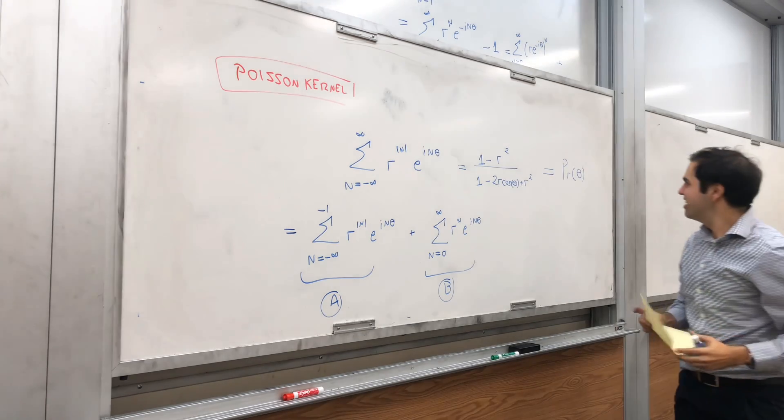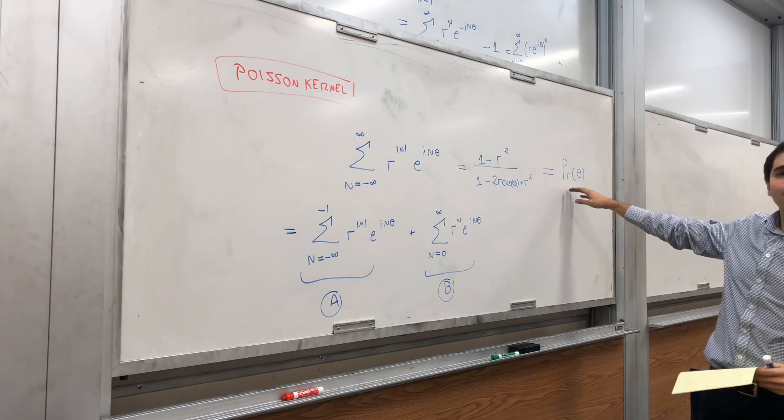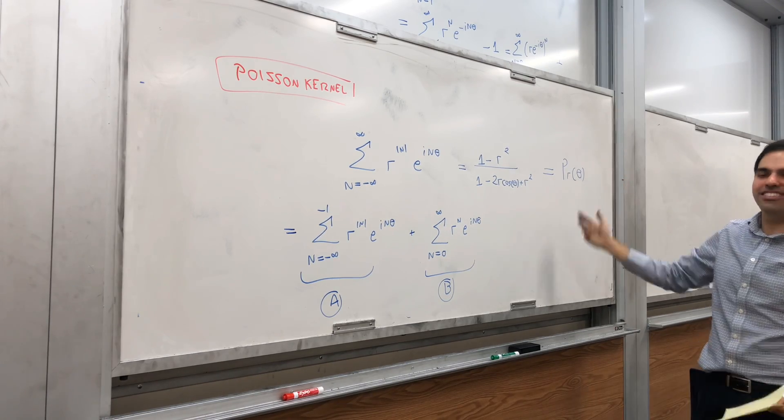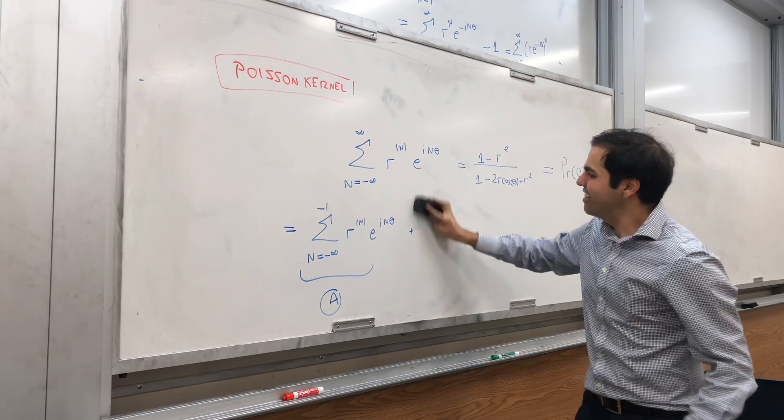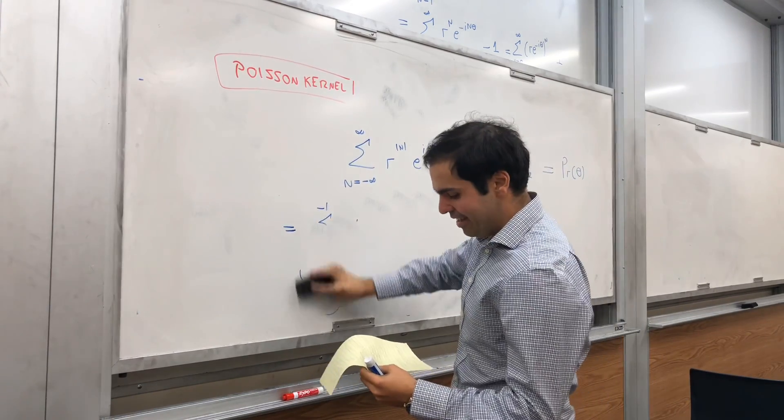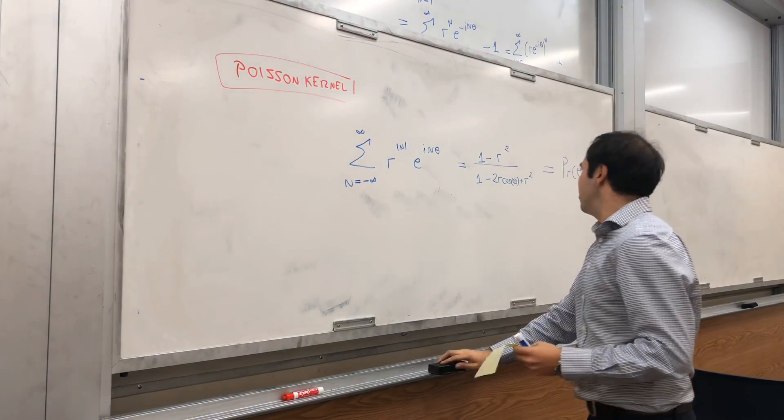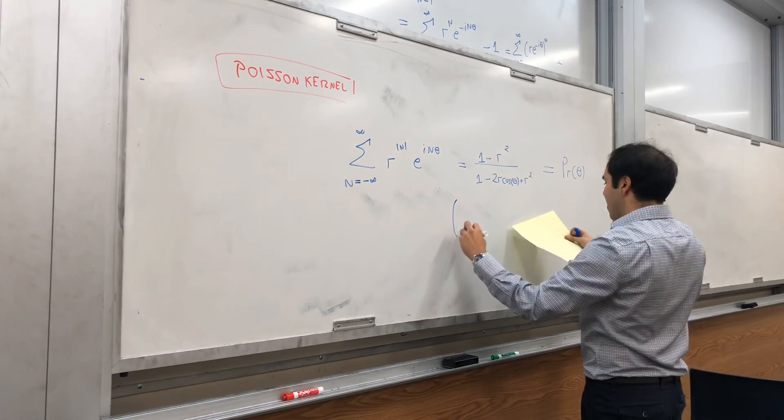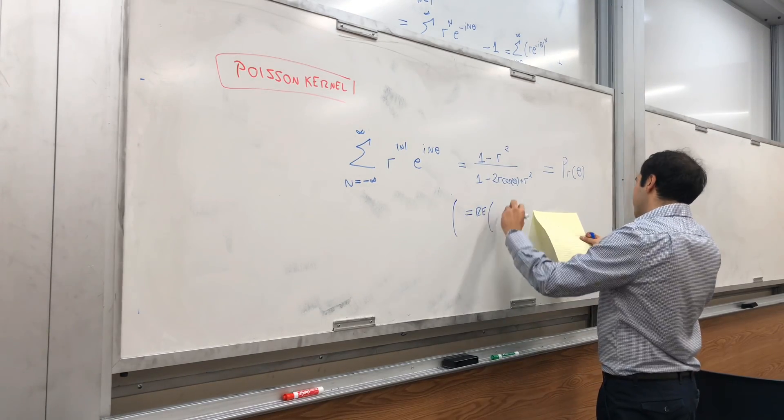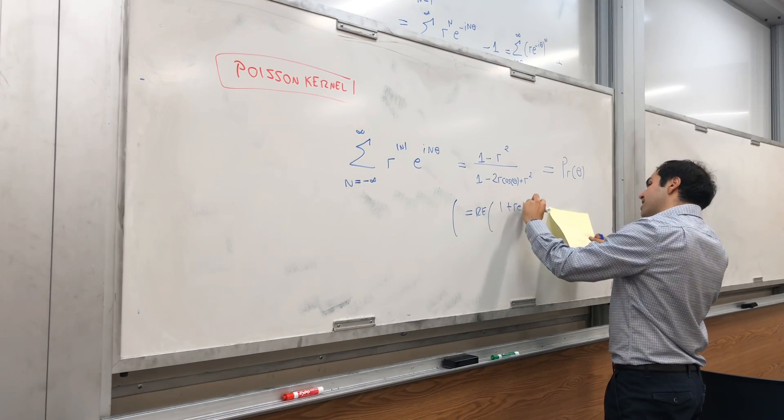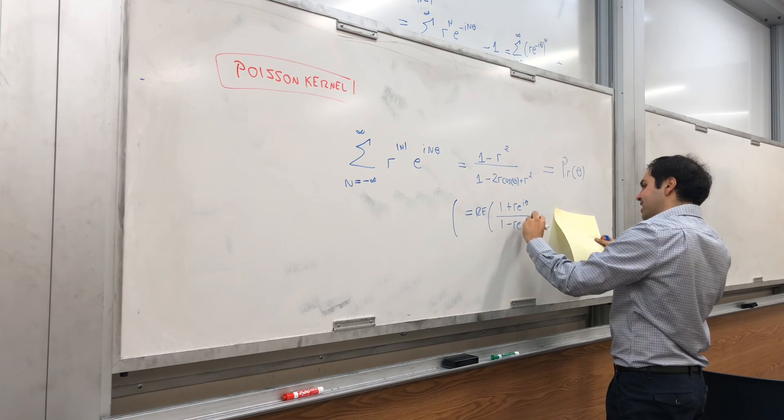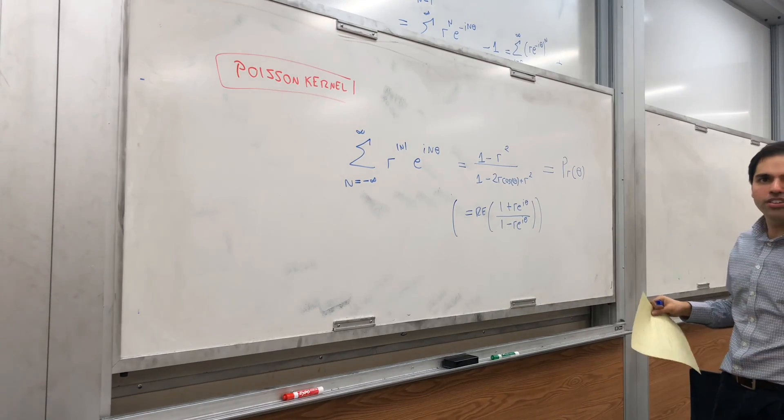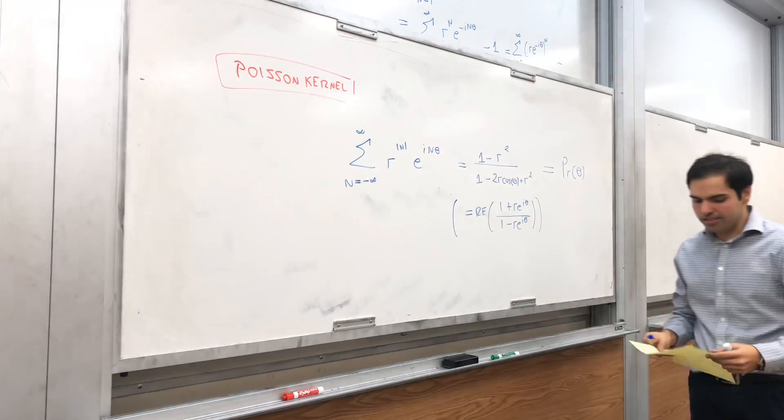So P_r(θ). Almost like my name, Payan Ryan Tabrizian, except Tabrizian or something. But no. And sadly, it's called the Poisson kernel. And let me show you why it's cool. So by the way, if you really want to write this in just complex fashion, that's the same thing as the real part of (1 + re^(iθ))/(1 - re^(iθ)). If you calculate this out and use conjugate forms and stuff, in the end, you can show this is true.